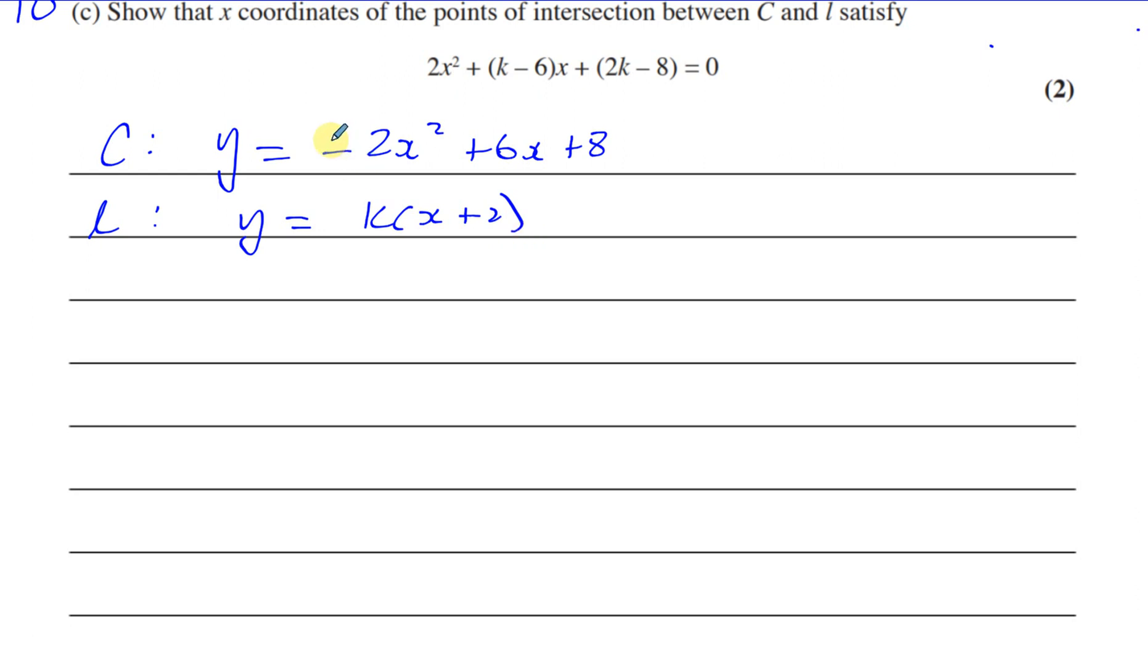And the equation of the line is y equals k times x plus 2. So where they intersect will be where they're equal to each other, where the x and y values are common to both of them. So what we could do here is we could just simply replace the y in one of the equations by the other equation. For example, I could write instead of this y, I could write what y is equal to from the other equation.